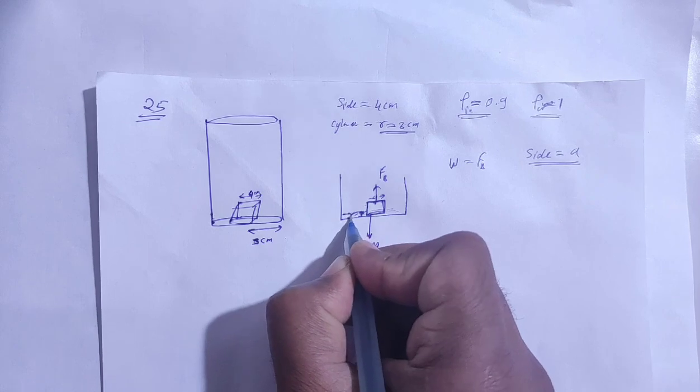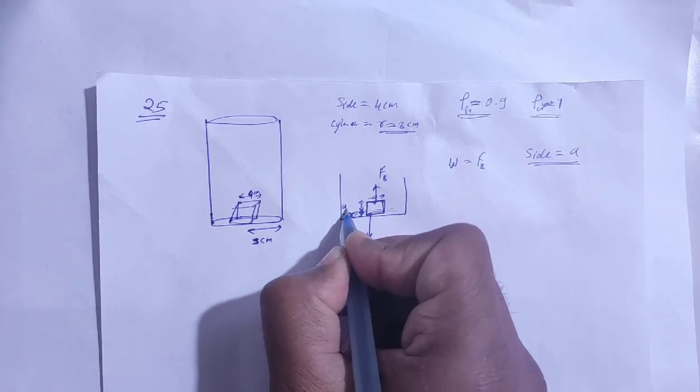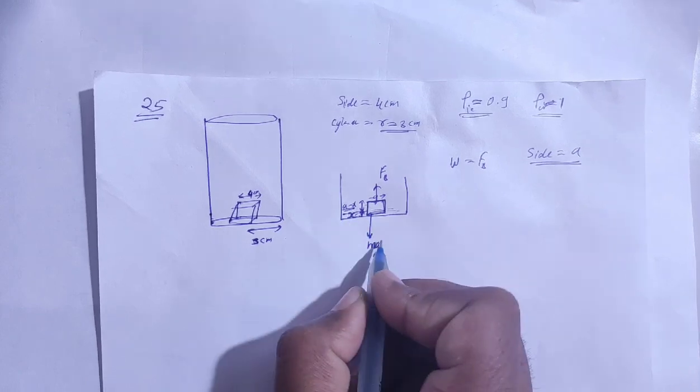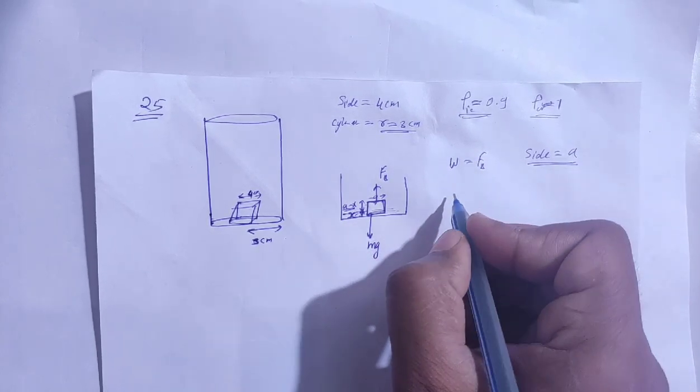So if x is filled with water, then the upper side is a minus x, right? Okay, so now it floats, so weight is equal to buoyant force. Buoyant force is equal to weight.